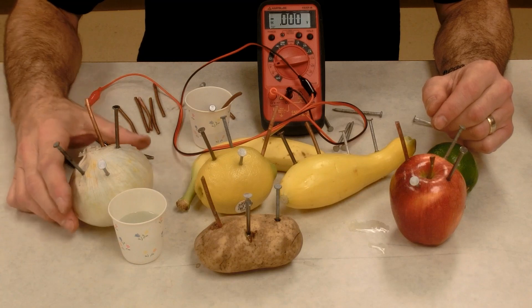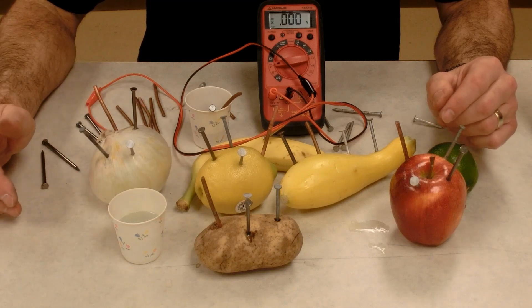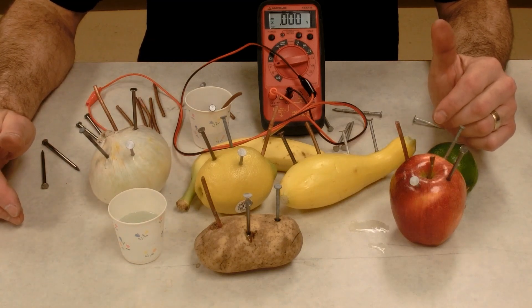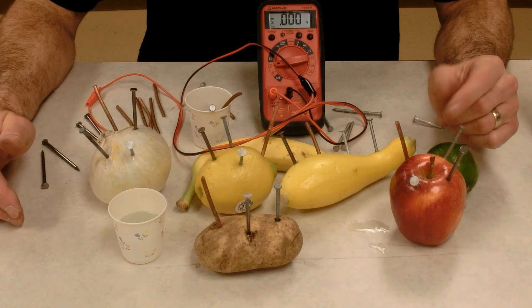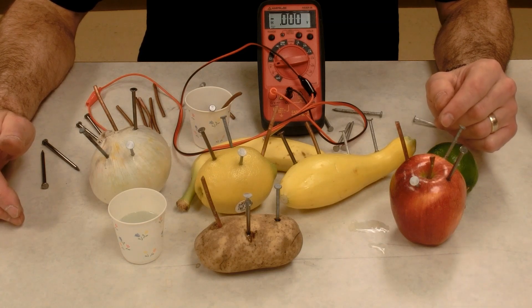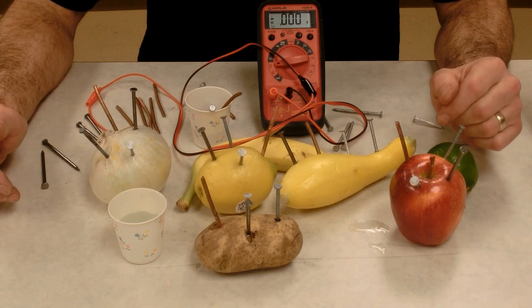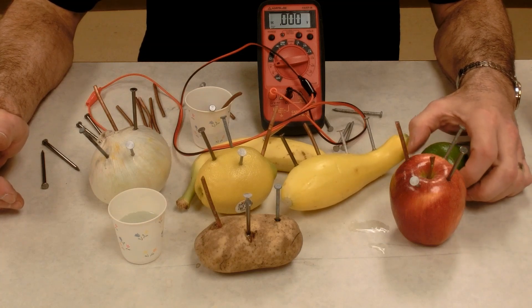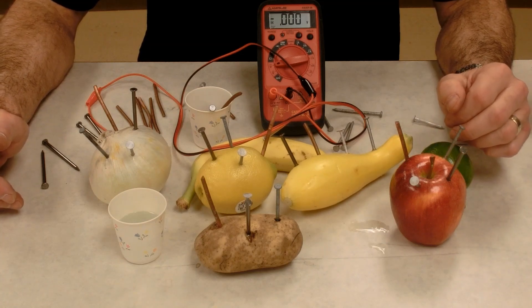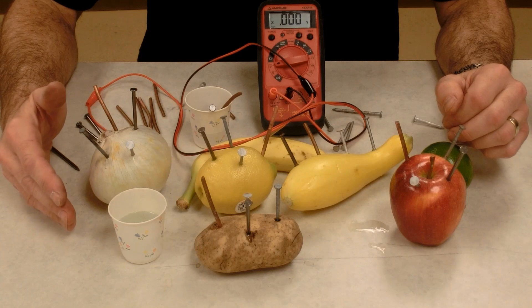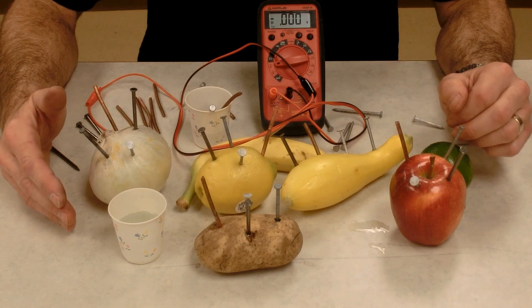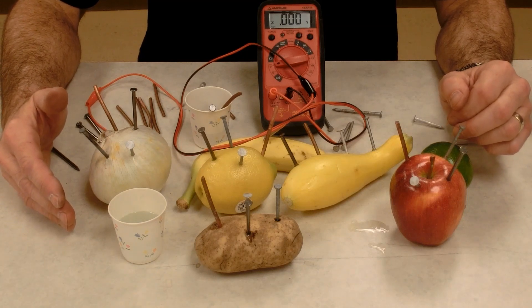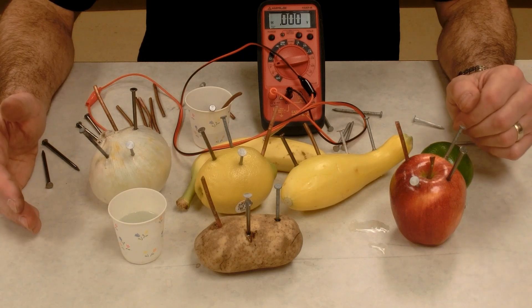You can also make batteries that work very well out of gold and platinum. However, those materials are very expensive. Silver also. So we typically use a lot of copper and a lot of zinc. And you might have seen battery commercials where they talk about Duracell, the copper top battery. So that gives us an idea of the metal that's used in that one.